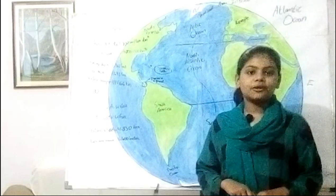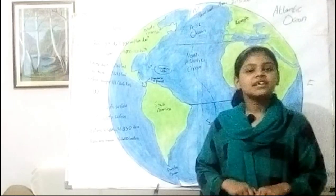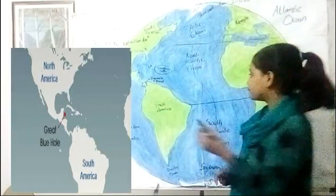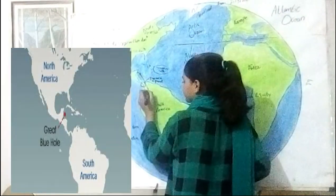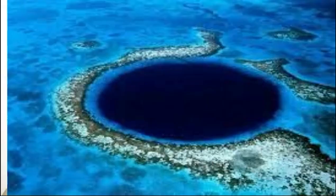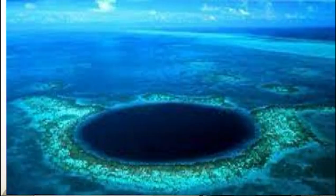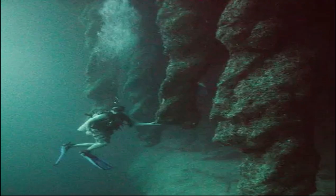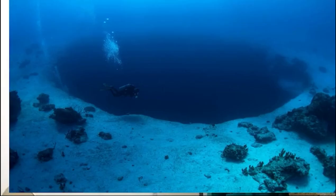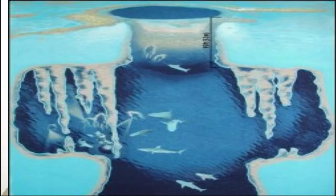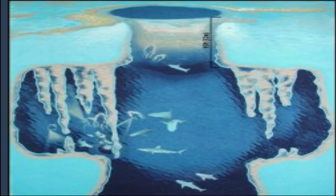The Great Blue Hole is located just over 100 km off the coast of Belize. It is an underwater sinkhole that researchers believe is the largest of its kind — circular in shape and characterized by its rich blue color. It is over 300 meters across and 125 meters deep.